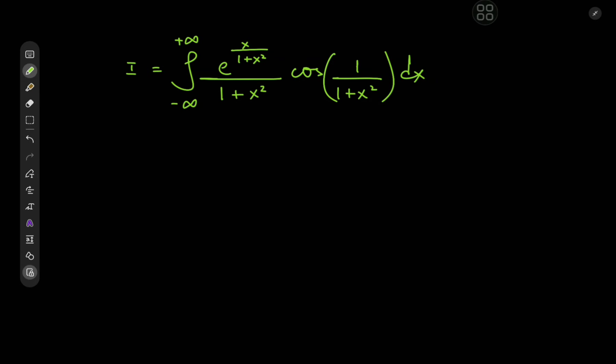Hello and welcome back. Kamal here with yet another very interesting integral. We have the integral from negative to positive infinity of e to the x divided by 1 plus x squared, the whole thing divided by 1 plus x squared and being multiplied by the cosine of 1 divided by 1 plus x squared.